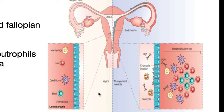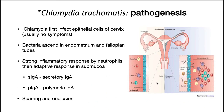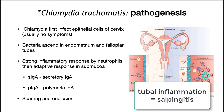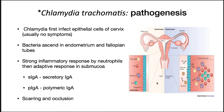These inductive sites, which contain B cells and T cells, dendritic cells, and macrophages, coordinate the initiation of an acquired immune response including the deployment of secretory IgA (sIgA) and polymeric IgA (pIgA). This immune response manifests as pelvic inflammatory disease in women. It will cause tubal inflammation — also known as salpingitis — and scarring and occlusion, which leads to infertility and ectopic pregnancy, a pregnancy outside the uterus.